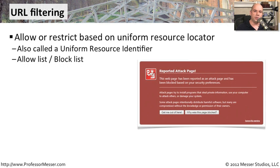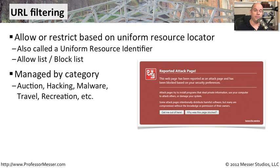Another common way to do content filtering is by URL — the Uniform Resource Locator — which is the website address you may be visiting inside of your browser. This isn't quite as common as email filtering, but many organizations prefer to do this type of filtering to control what people are seeing inside of their browsers. They'll create an allow list and a block list to determine where people can go. Of course, it would be very difficult to list every single URL someone might visit, so it's very common to do this by category.